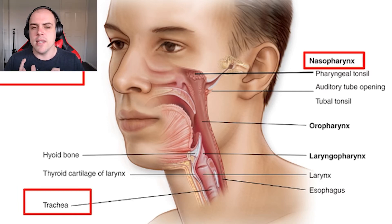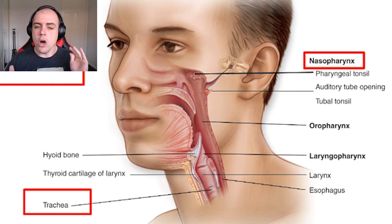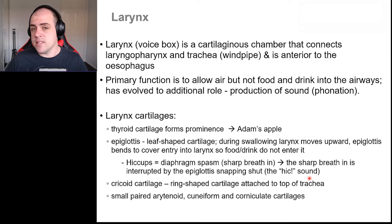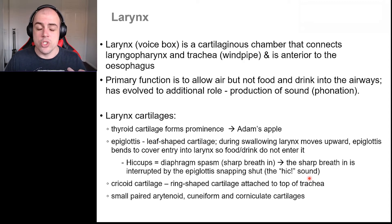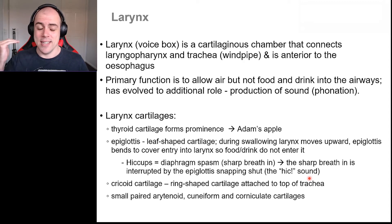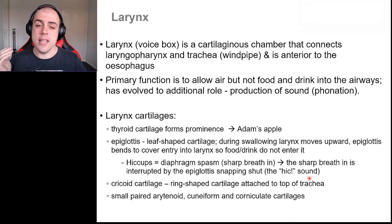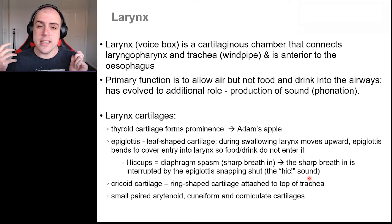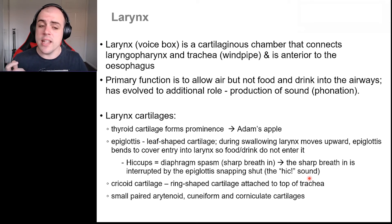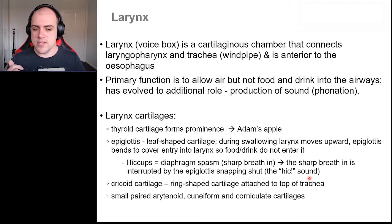The primary function of the larynx is the separation of food and air. Air can go in the stomach — that's fine, within a reasonable amount you'll just burp. Food cannot go in the lungs; that is insanely bad, and we want to prevent the entry of food into the lungs as much as possible. A key structure that helps with this is the epiglottis.